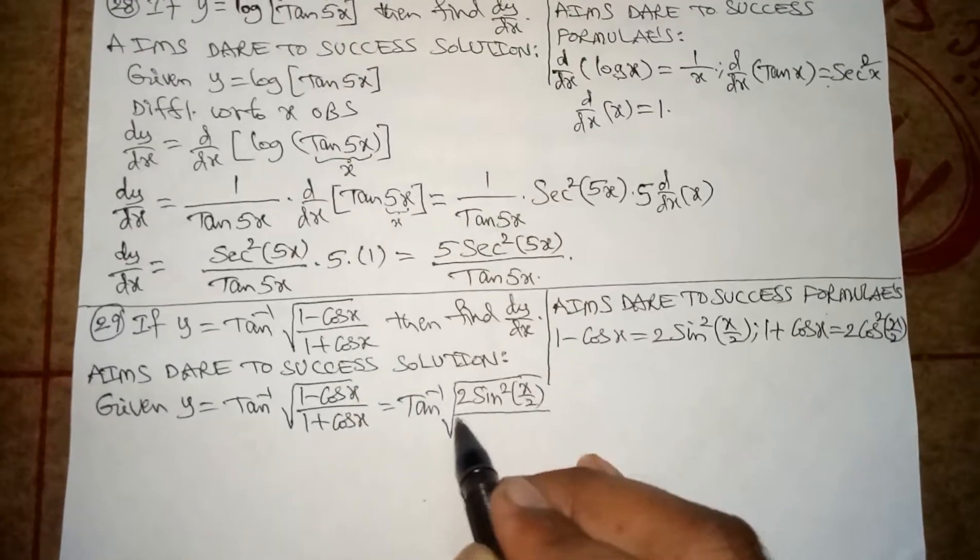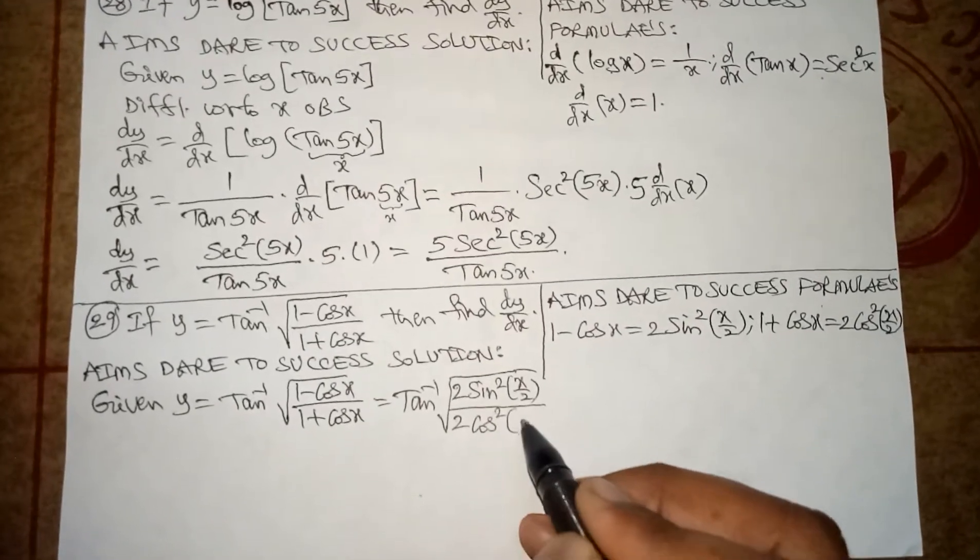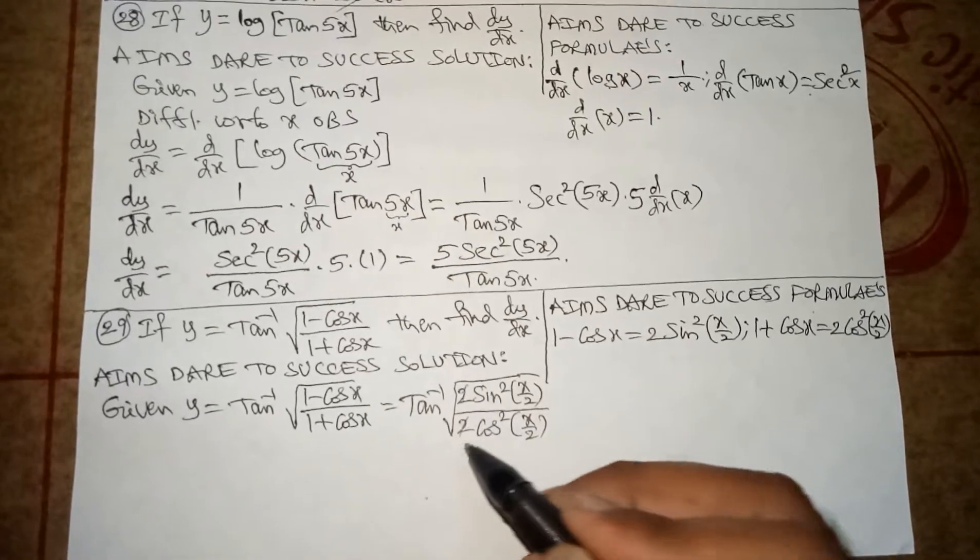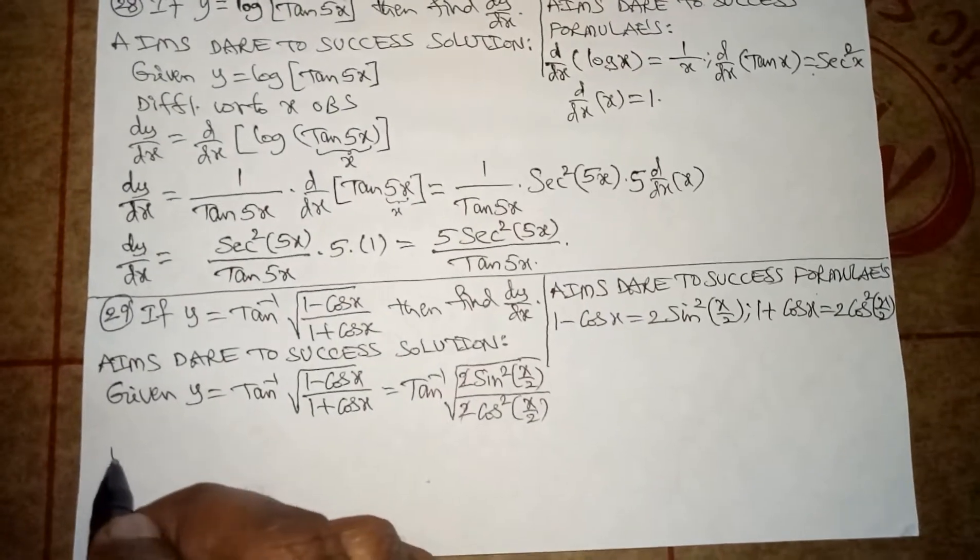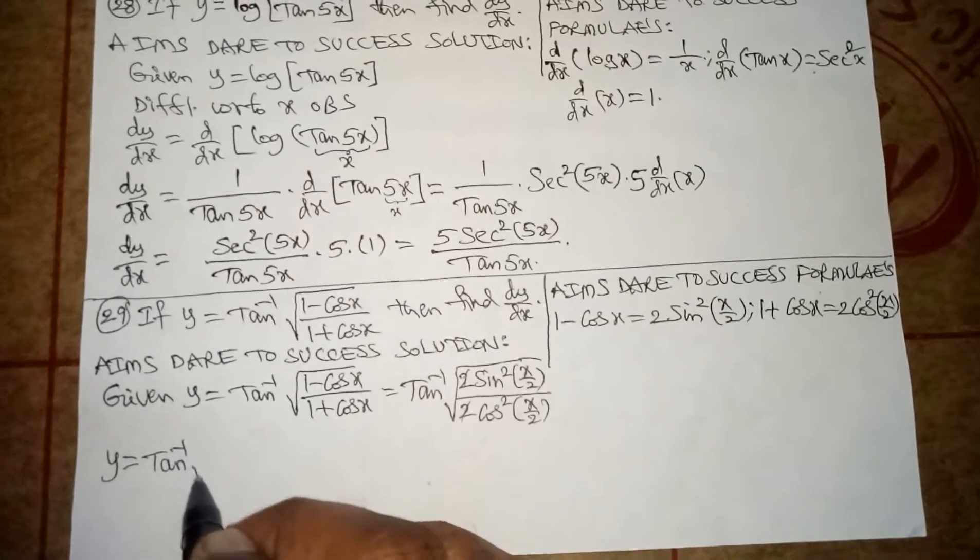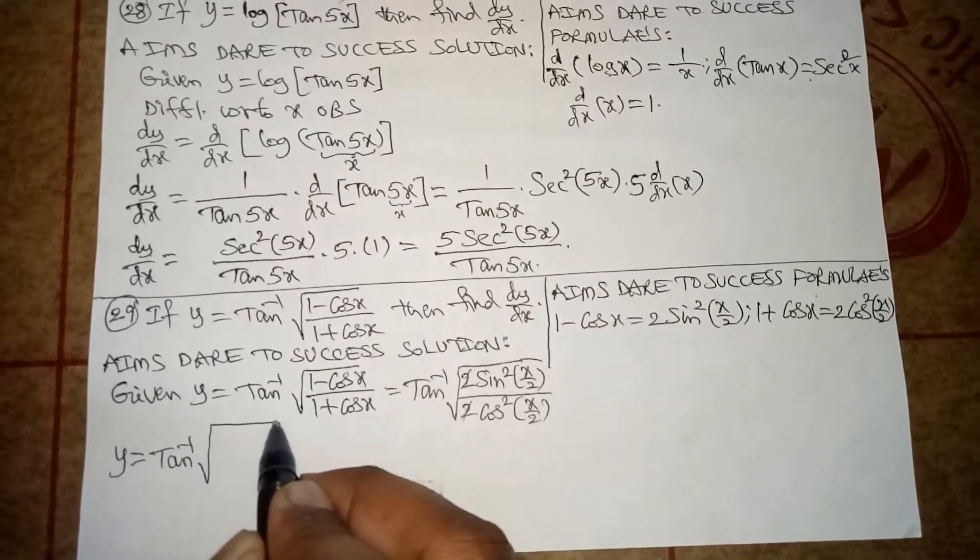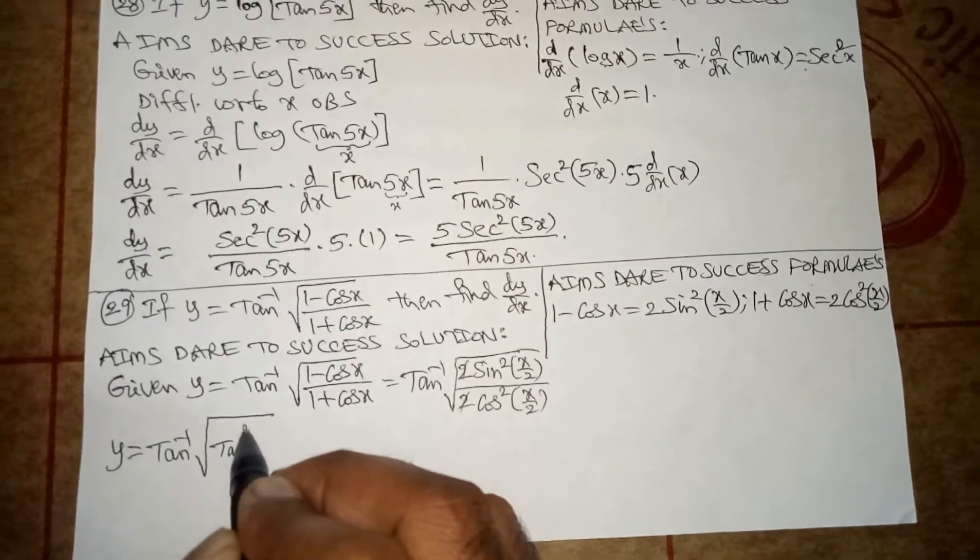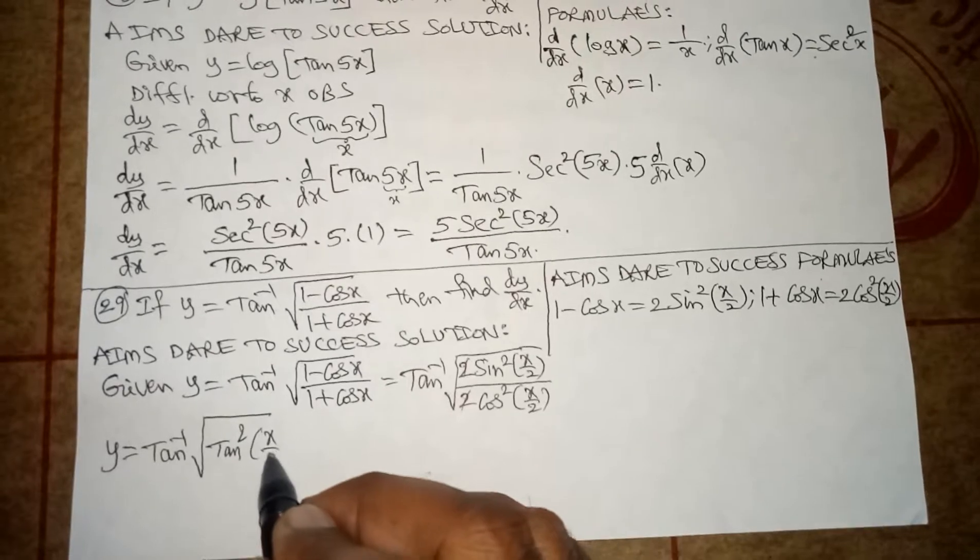2s get cancelled. We get y is equal to tan inverse under root[sin square(x by 2) by cos square(x by 2)] is tan square(x by 2).